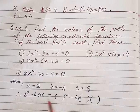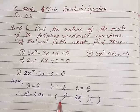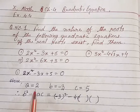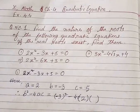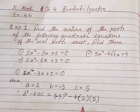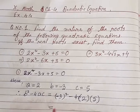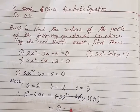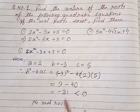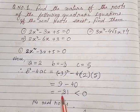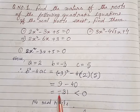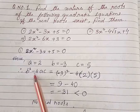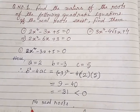b² - 4ac: b = -3, so (-3)² - 4 × 2 × 5. That gives 9 - 40, which gives -31. So b² - 4ac = -31, which is less than 0. As already discussed, if b² - 4ac is less than 0, the equation has no real roots.